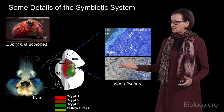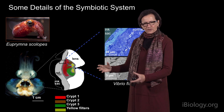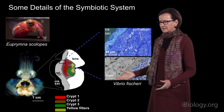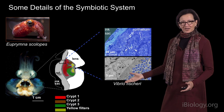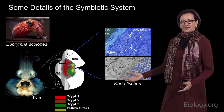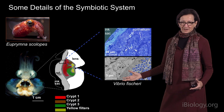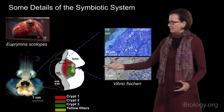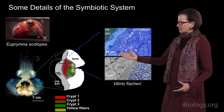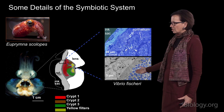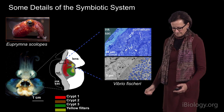Most light organs of animals are very similar to backwards eyes — they have associated tissues that an eye has. They have a lens, a reflector, and an ink sac; the diverticula of the squid's ink sac act like an iris to allow more or less light of Vibrio fischeri out. Vibrio fischeri is a luminous bacterium — it makes light for the animal. This histological section shows the epithelium supporting Vibrio fischeri, and a transmission electron micrograph shows they occur in very dense culture along the apical surfaces of the epithelia.